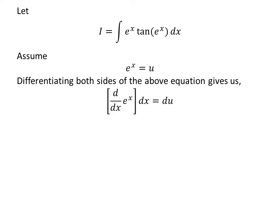Taking differential of both sides gives us derivative of exponential of x with respect to x times differential of x is equal to differential of u. We know derivative of exponential of x is exponential of x as per the definition of exponential function.